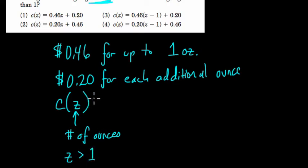So at first glance you might think this, as I first did, that you're starting off with 46 cents for the first letter or whatever, the first ounce, and then you're adding 20 cents per ounce after that.